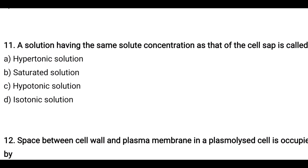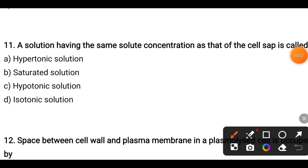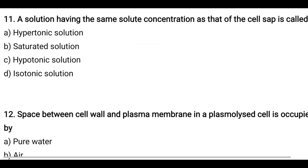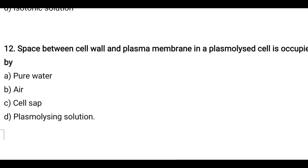Next question: A solution having the same solute concentration as that of cell sap is called — options are hypertonic solution, saturated solution, hypotonic solution, or isotonic solution. When two solutions have the same solute concentration they are referred to as isotonic to each other. So the correct answer is isotonic solution. Next question: The space between the cell wall and plasma membrane in a plasmolyzed cell is occupied by — options are pure water, air, cell sap, or plasmolyzing solution.